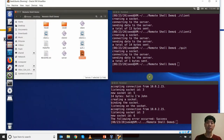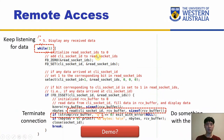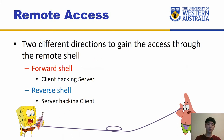That's the normal way of establishing connections. You could extend this — for example, create a server that calculates the Fibonacci sequence where clients provide a value. That's what remote access does normally. Now let's look at two different ways of gaining remote access maliciously. The first is the forward shell, where the client hacks the server. The second is the reverse shell, where the server hacks the client.